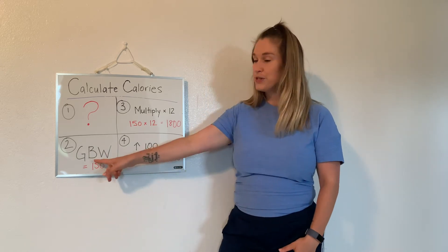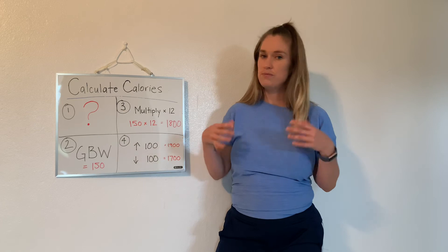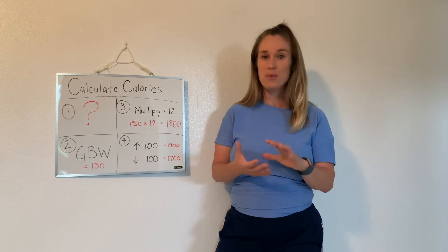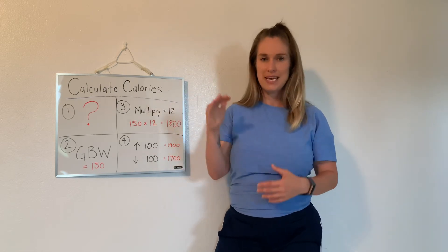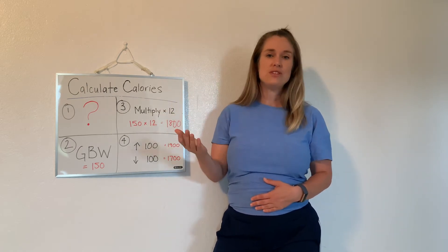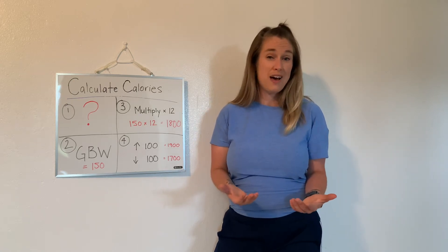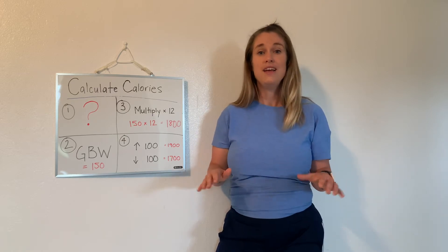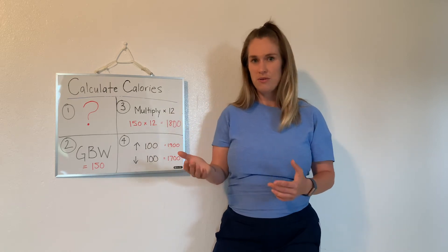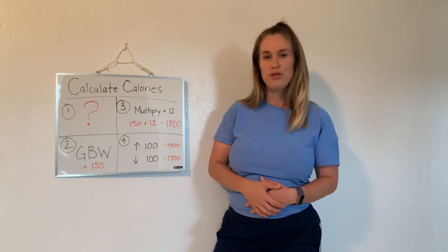First things first, we're going to determine your goal body weight. Be realistic here — if you're 200 pounds, don't set your goal body weight at 120; aim for something like 175 and take it in chunks. The reason is you want your calories to be higher at the beginning, because after periods of dieting your body adapts, and eventually you won't be able to lose fat at those same calories anymore. You want as much wiggle room as possible.